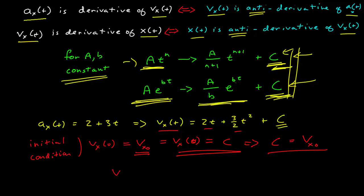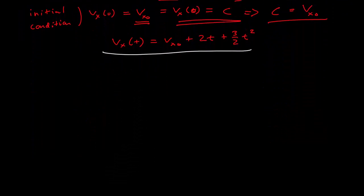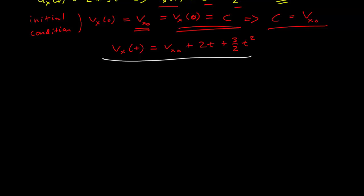So the final velocity function that I would write, the full velocity function, I would write as vx0 plus 2t plus 3 halves t squared. I put my constant up front, you can put it anywhere you want, but this is now the correct form of that velocity function. Let's keep going, this is for practice, we'll do this one more time.